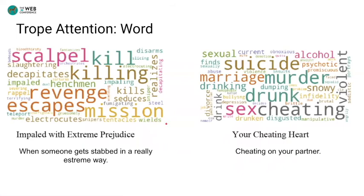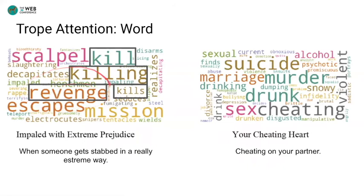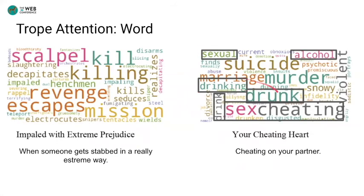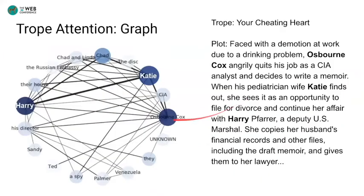Let's see what our model pays attention to when predicting each trope. In Impaled with Extreme Prejudice, where someone gets stabbed, we see kill, revenge, and escape attended. In Your Cheating Heart, we see sex, cheating, and drinking and alcohol attended by the model. Here is a graph attention example of Your Cheating Heart — in the movie plot, Harry is having an affair with Clark's wife, Katie. Our model focuses on the three characters involved in the cheating.